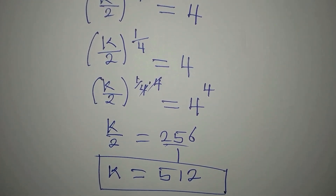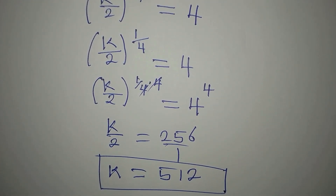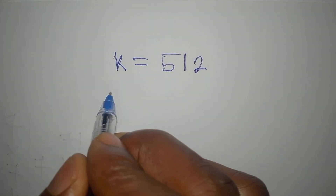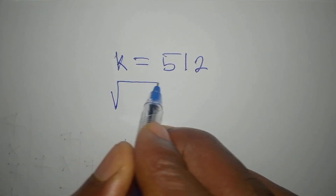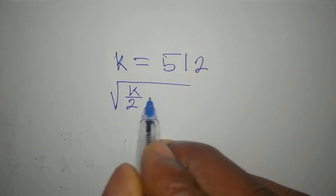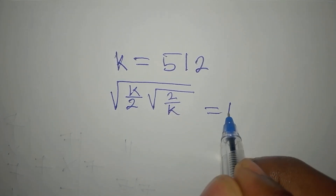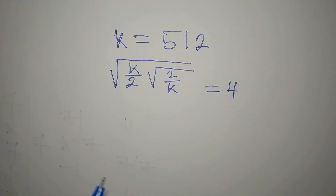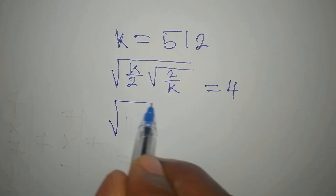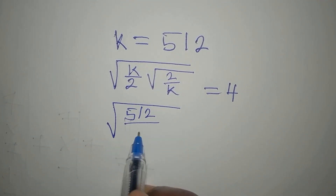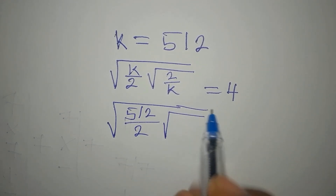As we always do, let's verify our result by substituting back into the original equation. The equation is: square root of k over 2, multiplied by the square root of 2 over k, equals 4. In place of k we write 512, giving us square root of 512 over 2, multiplied by the square root of 2 over 512.